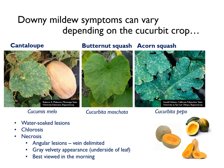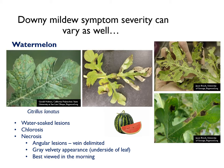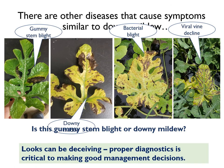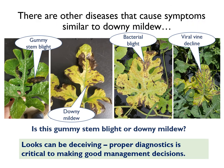Downy mildew symptoms can vary with different cucurbits. Symptoms on cantaloupe and squash tend to start as small pinpoint lesions that may expand following leaf venation. Downy mildew symptoms can even vary on a host. On watermelon, lesions can vary from pinpoint lesions to even larger blotches. However, you need to be careful not to make the diagnosis based on only symptoms. As you can see, looks can be deceiving — and not just for watermelon.